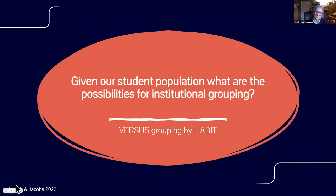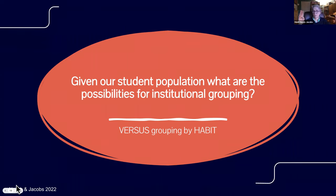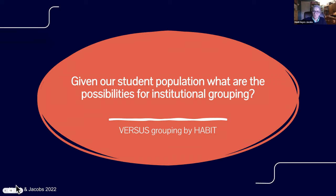Given these realities, we want to think about other possibilities for institutional grouping instead of the old way of just doing it by habit. We've always done grade levels — we've always had an elementary, a middle, and a high school. But there are different ways we can group. And because of virtual possibilities, we can really group kids in totally different ways than we could even 25 years ago.